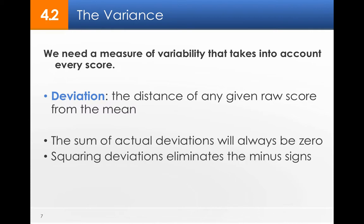The deviation is the distance of any score from the mean. So remember the mean is our average. If our average is 10, the score of 15, that deviation is 5.